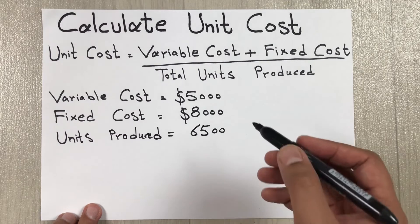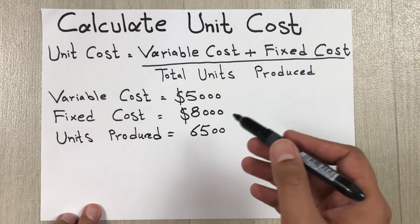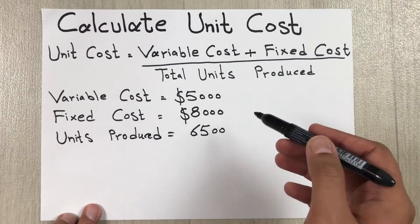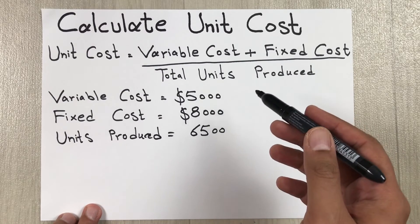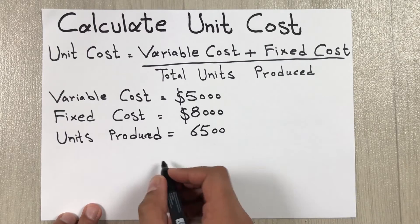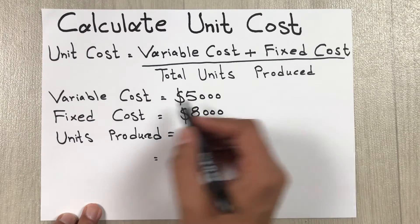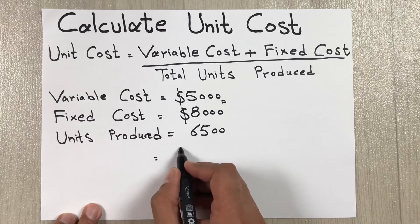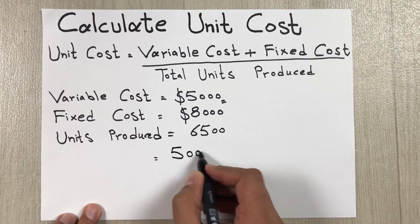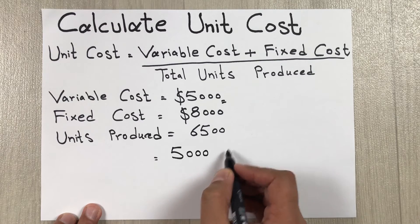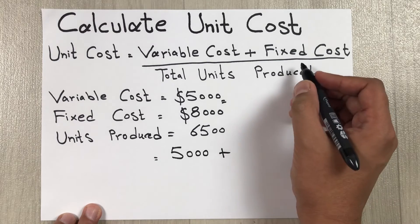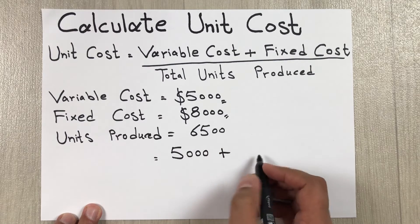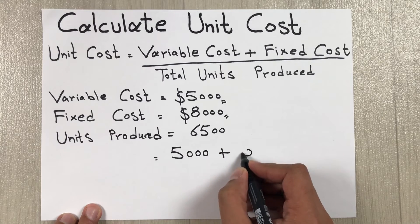Now we have all the values — we will simply put the values into the formula to get our answer. Our variable cost is five thousand dollars, so we write five thousand, then plus fixed cost, which is eight thousand dollars.